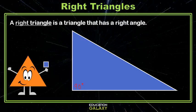This symbol here, this little square, it means 90 degrees. So let's just put this on the triangle to make sure everyone knows that this angle is 90 degrees.